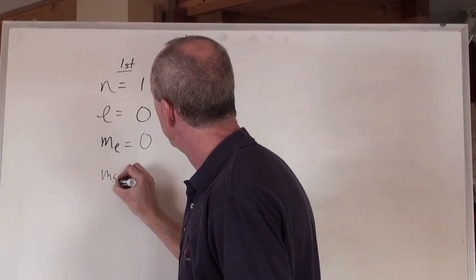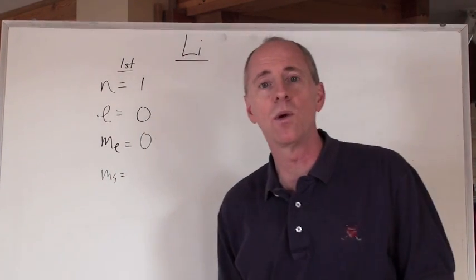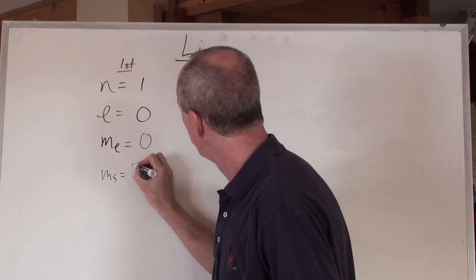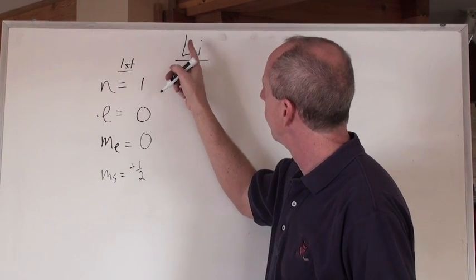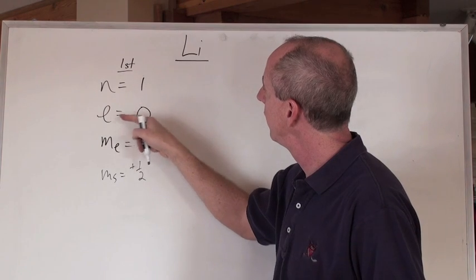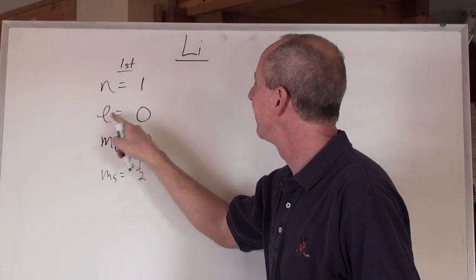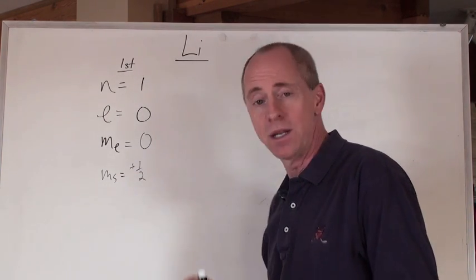What is the spin number? Well, I like to start with plus one-half. And so, there we go. We're going to say that the first electron for lithium is at n equals 1, l equals zero, ml equals zero, and the spin number is plus one-half.